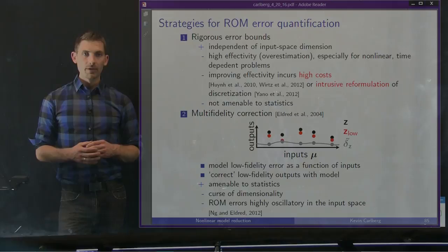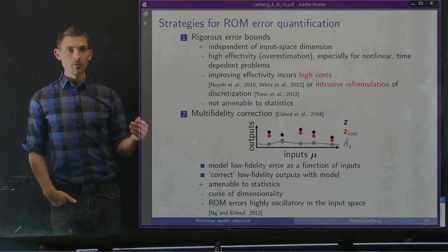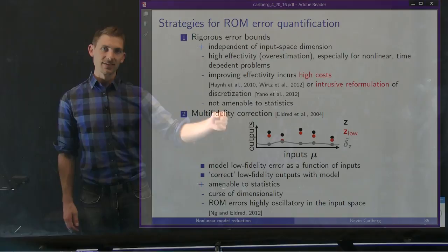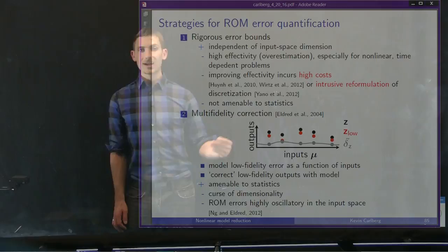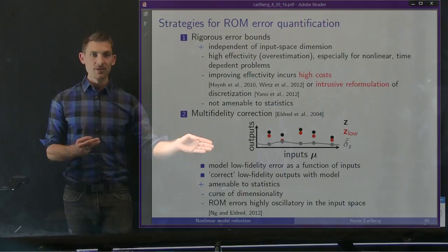Another way of quantifying ROM errors is the so-called multi-fidelity correction approach, pioneered by Mike Eldred almost 12 years ago at Sandia. The idea is if we have the reduced order model with inputs mu and outputs, we evaluate both the reduced order model and the full order model output response over a training set — for example, the drag produced by the ROM and the drag produced by the full model — and model how the ROM error behaves in the input space using Gaussian process regression.